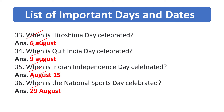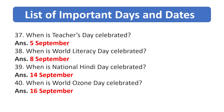When is National Sports Day celebrated? 29th August. When is Teachers Day celebrated? 5th September. When is World Literacy Day celebrated? 8th September. When is National Hindi Day celebrated? 14th September.